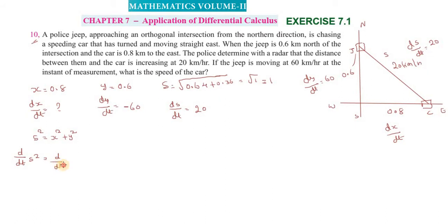s = √(x² + y²). Differentiating: 2s · ds/dt = 2x · dx/dt + 2y · dy/dt. After simplification, canceling the 2s, we get: s · ds/dt = x · dx/dt + y · dy/dt.